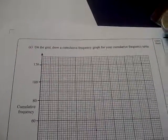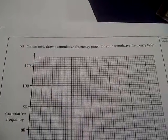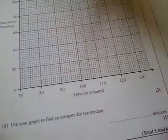18c says on the grid, draw a cumulative frequency graph for your cumulative frequency table. Now this is the grid. Here we put the cumulative frequencies on this axis and the upper class boundaries here.